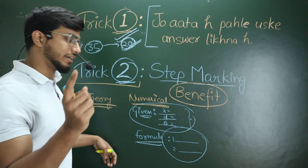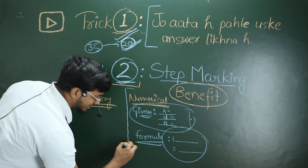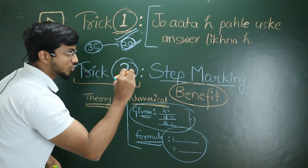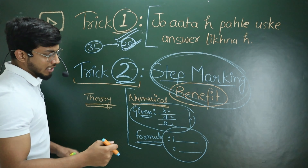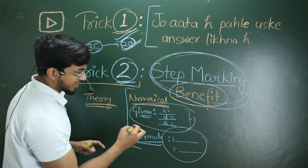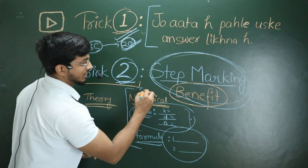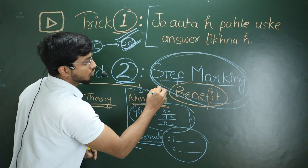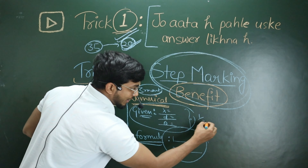The second step is to identify which chapter and topic the question is related to, and which formula applies. Then write the formula. Whether it is one formula, two formulas, or normally up to three formulas, write them all down.